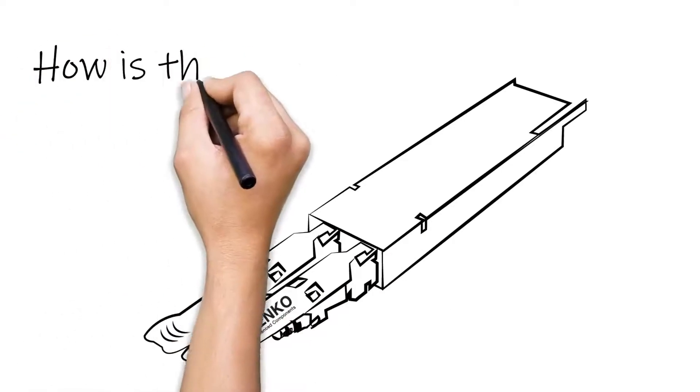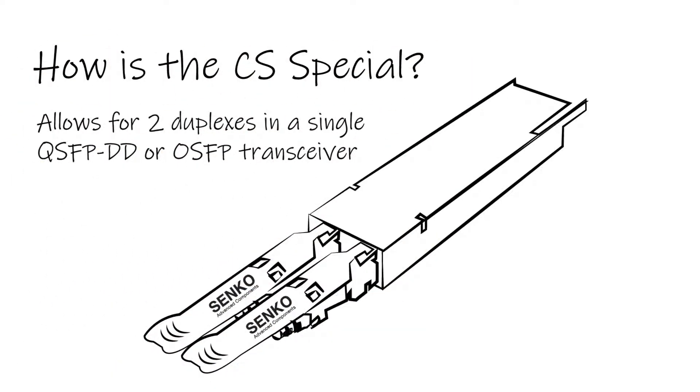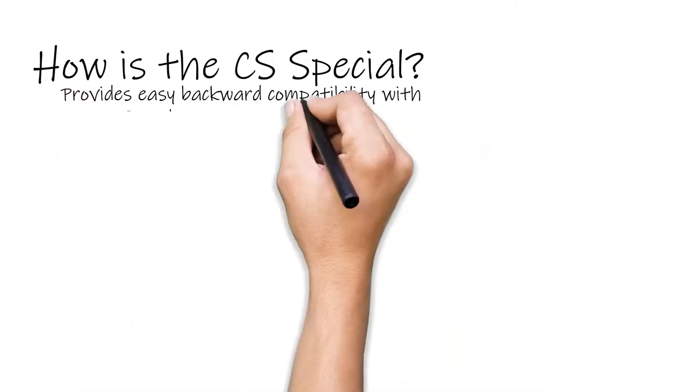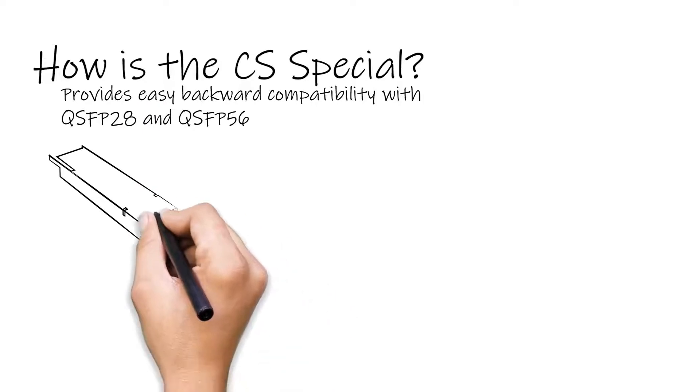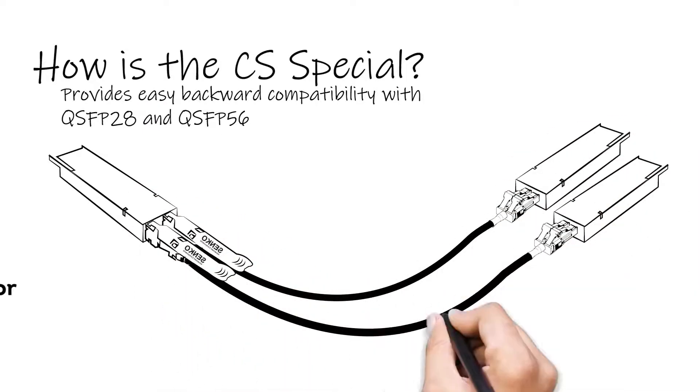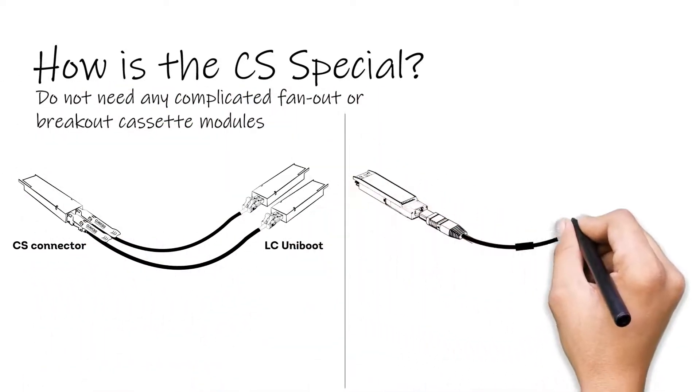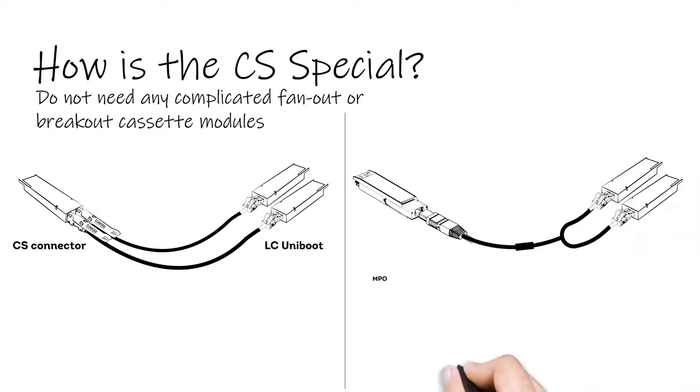So, what is so special about the CS? Most notably, the CS connector design is the first connector that enables two duplexes, or four fibers, to be installed in a single QSFP DD or OSFP transceiver. As each duplex can be managed in its own separate cord, the CS connector provides easy backward compatibility with QSFP 28 and QSFP 56, and eliminates the need for MPO fan-outs or breakout cassette modules.